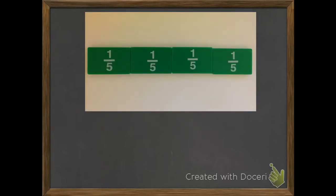Here we have some fraction tiles, just like last chapter, and we want to add them. If we're going to add each of these, we want to know how many fifths we have. We have one fifth, plus one fifth, plus one fifth, plus one fifth. We want to know what that equals. How many fifths do we have?